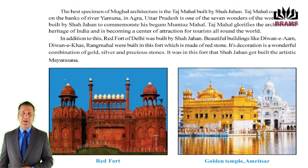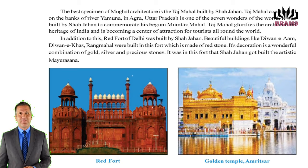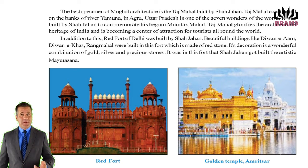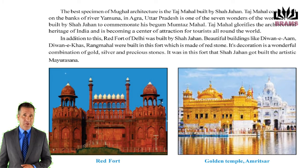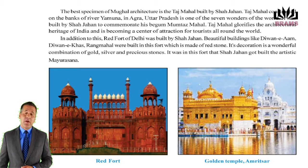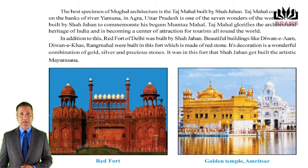The best specimen of Mughal architecture is the Taj Mahal built by Shah Jahan. Taj Mahal, constructed on the banks of River Yamuna in Agra, Uttar Pradesh, is one of the seven wonders of the world. It was built by Shah Jahan to commemorate his Begum Mumtaz Mahal. Taj Mahal glorifies the architectural heritage of India and is becoming a center of attraction for tourists all around the world.